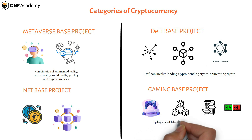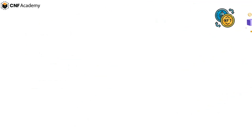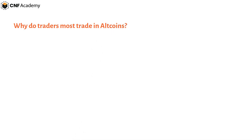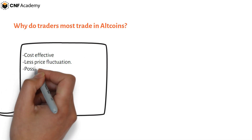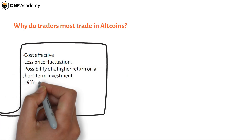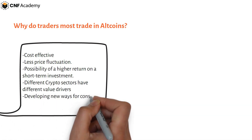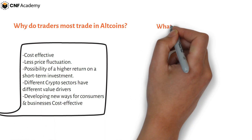In some cases, players of blockchain games have earned enough to pay for cost of living, making these games also known as play-to-earn games. Traders mostly trade in altcoins because they are cost-effective, have less price fluctuation, and offer the possibility of higher returns on short-term investments. Different crypto sectors have different value drivers, developing new ways for consumers and businesses to make transactions cost-effective.